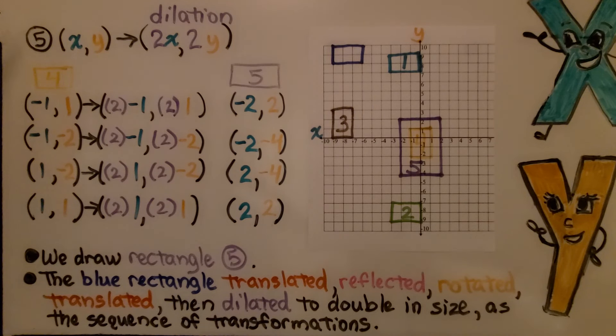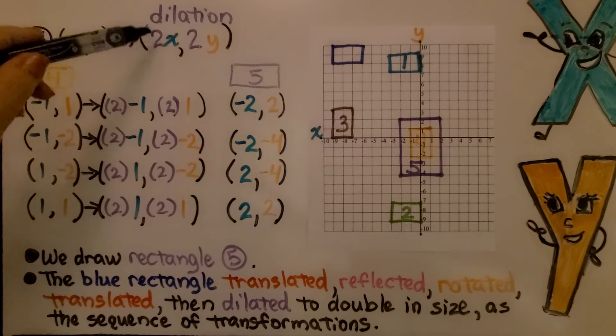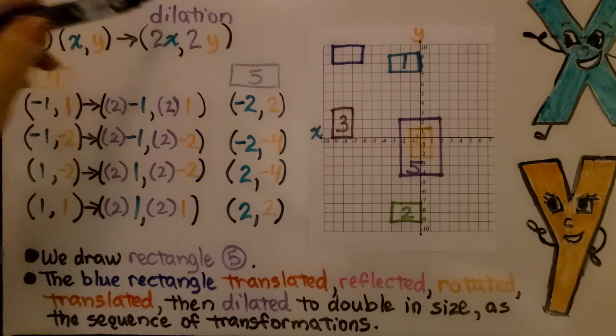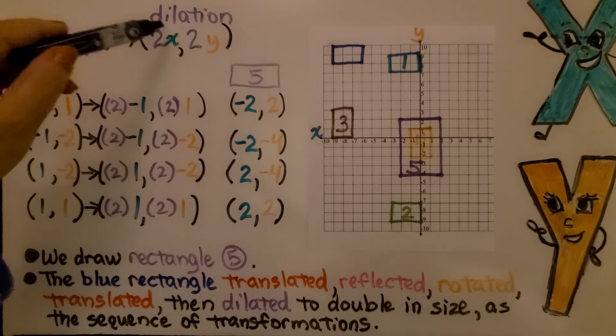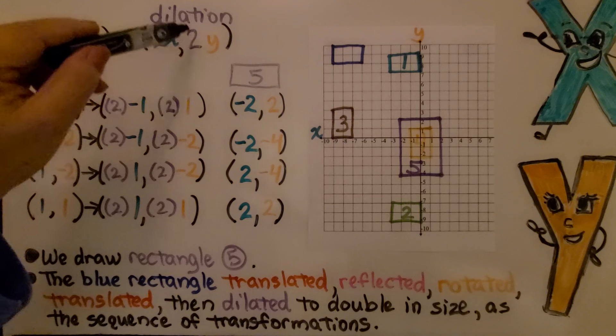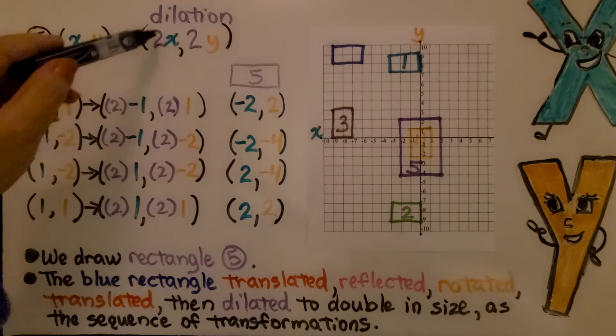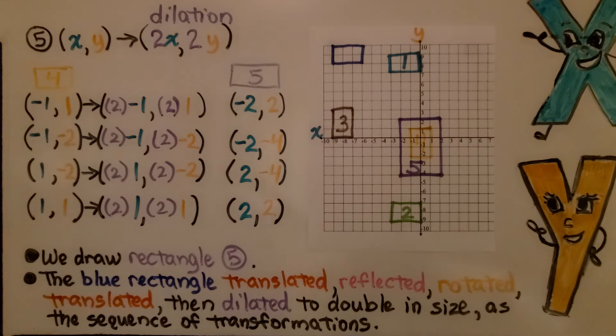For the final transformation in the sequence, number 5, it's telling us that the x and y values are going to map to 2x, 2y. Well, we know that's a dilation. We're enlarging the figure. We're multiplying it by 2 for each x and y value.